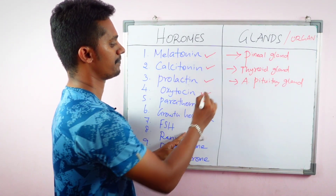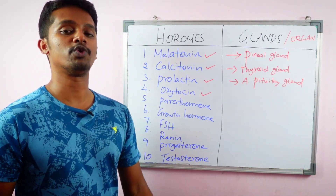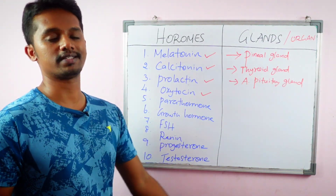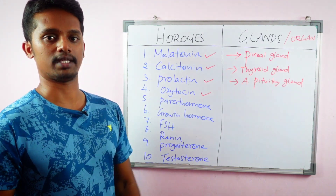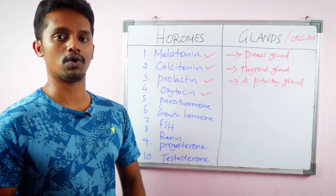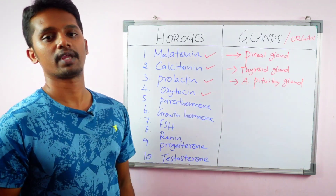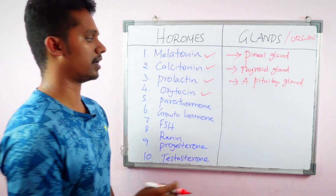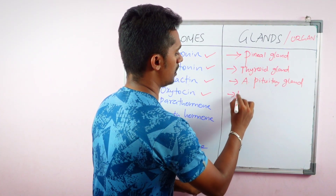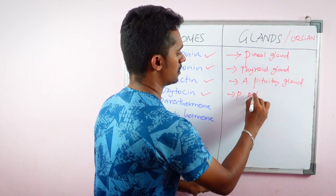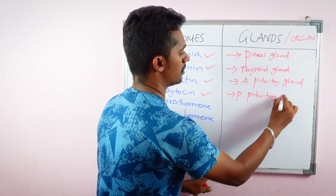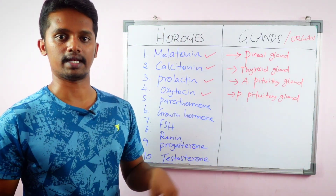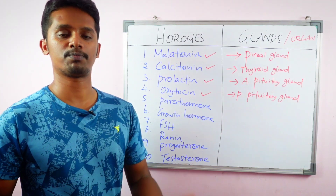Next, Oxytocin. Oxytocin is involved in milk ejection and uterus contraction — it is very helpful during pregnancy. This hormone is produced by the pituitary gland, but not the anterior pituitary like prolactin; rather, it is the Posterior pituitary gland.